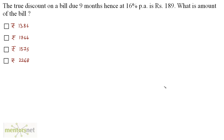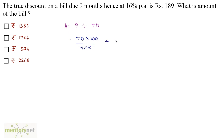The true discount on a bill due 9 months hence at 16% per annum is 189 rupees. What is the amount of the bill? The amount equals the principal or present worth plus the true discount, which is the interest on the principal. Amount is what we have to find. The formula gives P equals true discount times 100 divided by N times R. So it is 189 times 100 divided by N times R, plus the true discount 189.